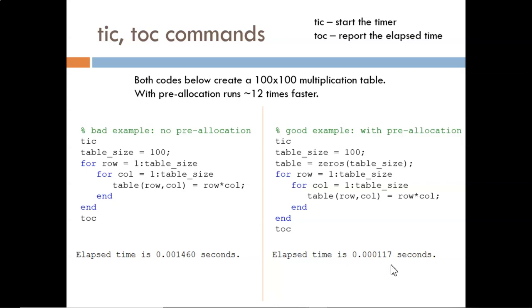The example on the right, which pre-allocates the table, runs in about one twelfth of the time. Now imagine a larger process. Would you rather wait one hour or 12 hours?